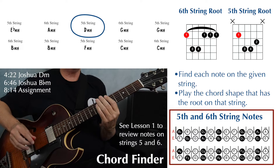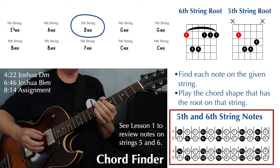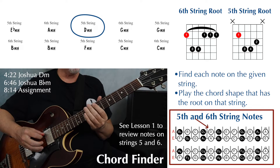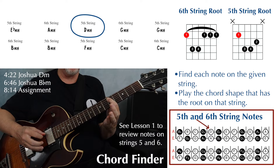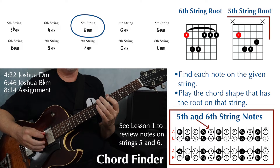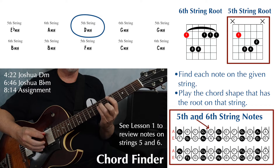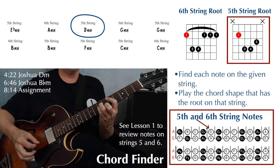Next we have D minor on string five. First, you need to find your D on the fifth string so you know where your root note is and where to place the shape. That's going to be at the fifth fret. That is a fifth string shape. There's your D minor.